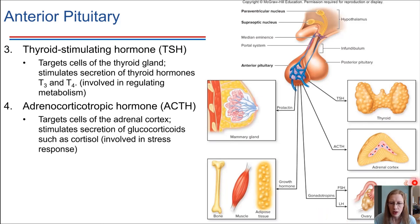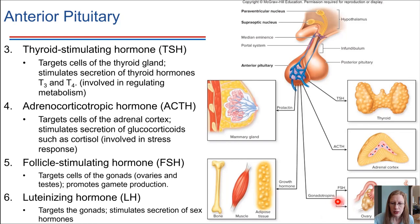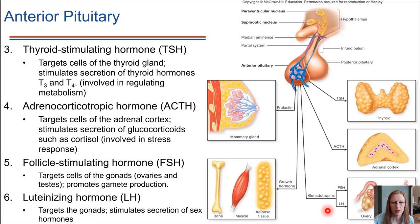Lastly, we have gonadotropic hormones, which are present in both males and females. First is follicle stimulating hormone, which promotes gamete formation in both the ovaries and testes. And the last one on the list is luteinizing hormone. This one also targets the gonads, but it's facilitating the secretion of sex hormones — not gamete production specifically, but sex hormones in general.